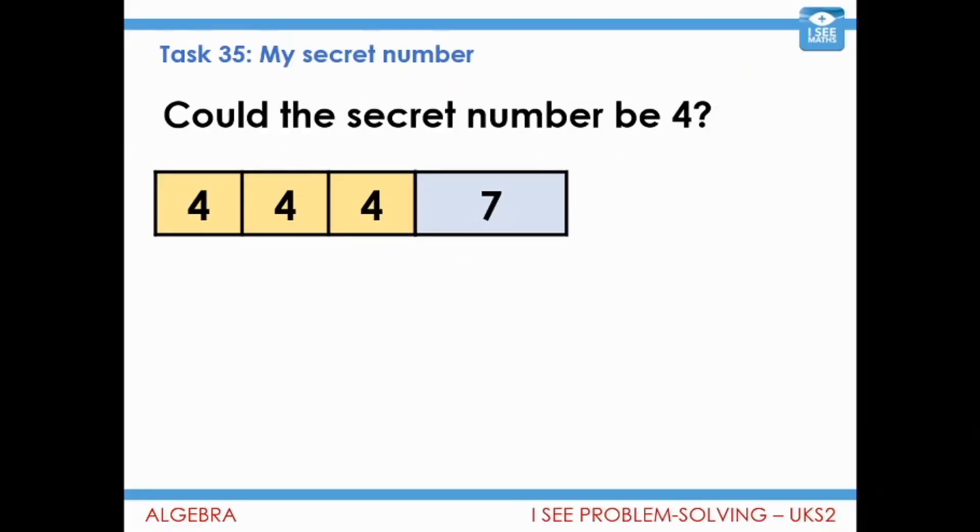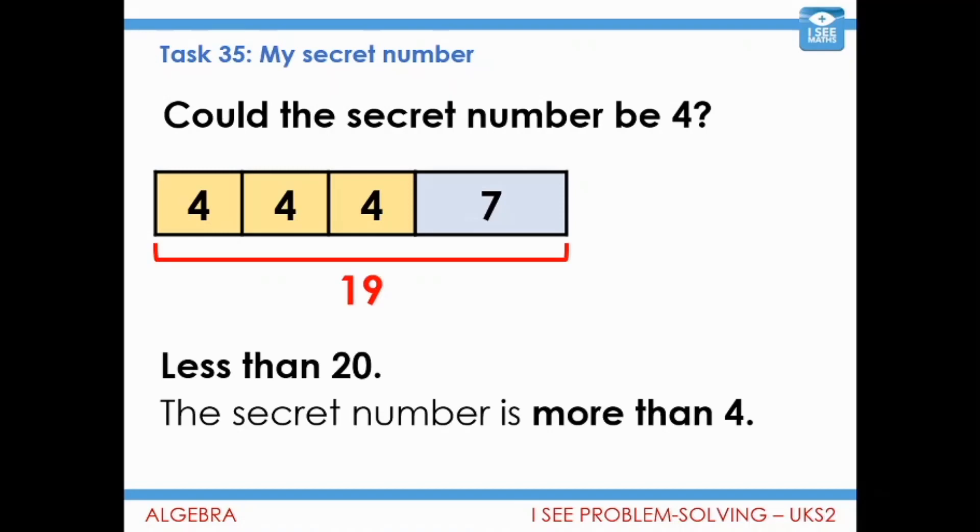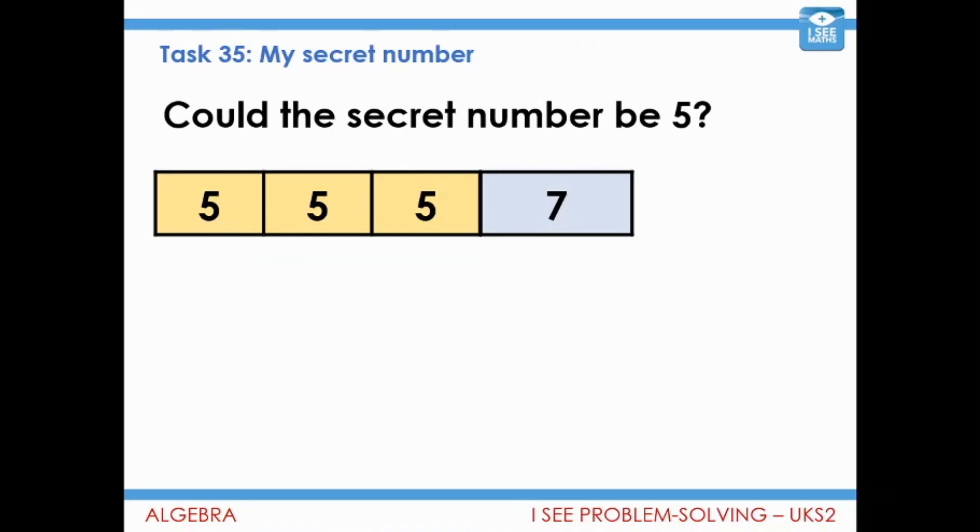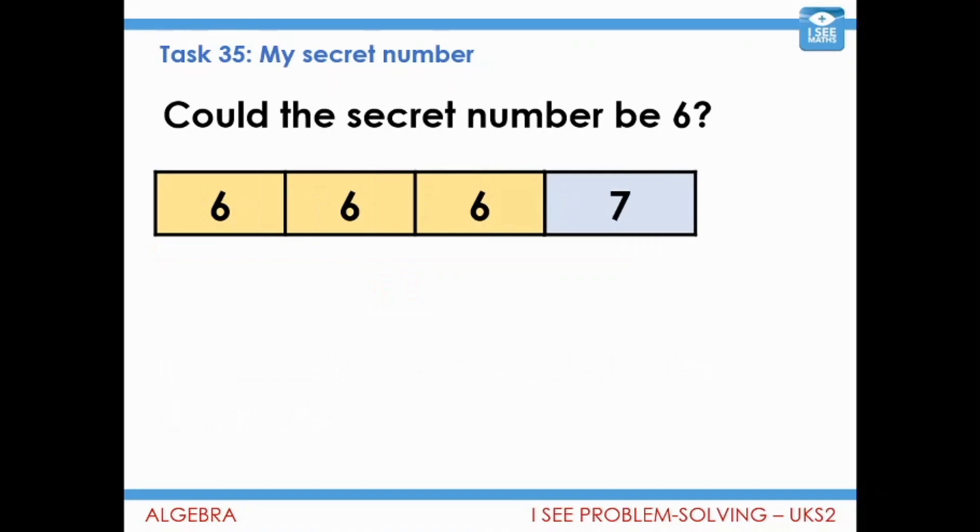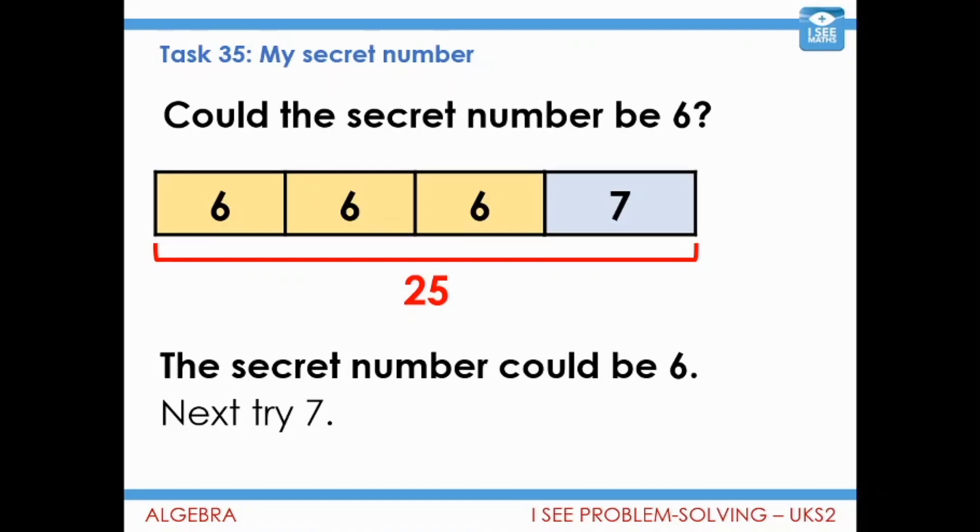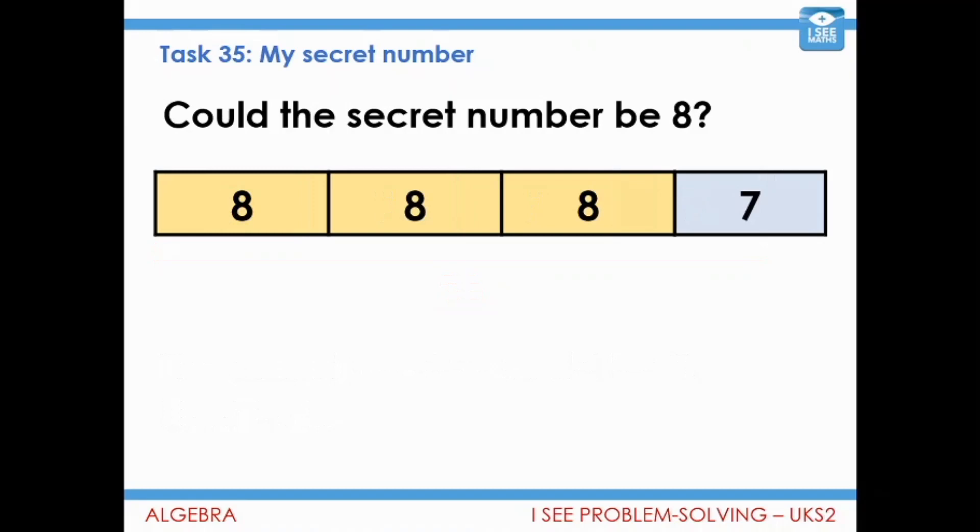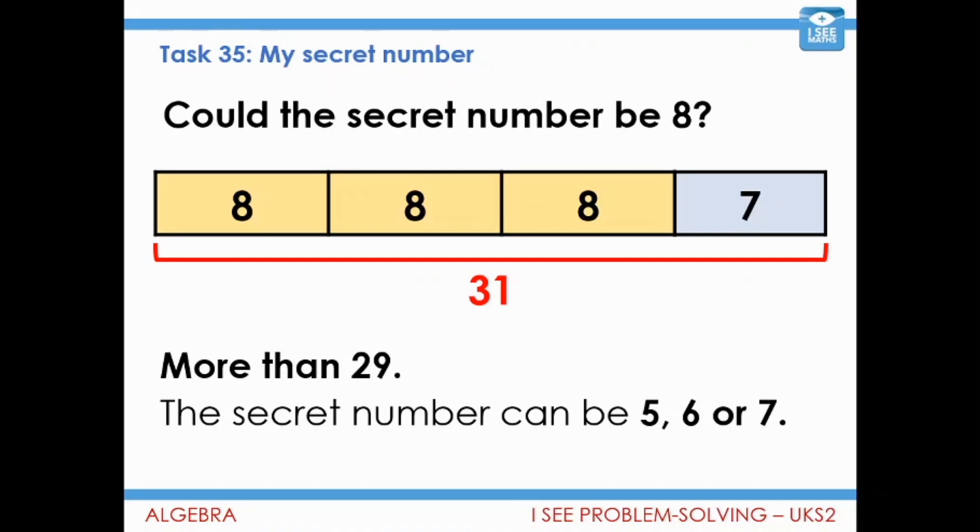Let's see if we can work through to find all the possible secret numbers. So, could the secret number be 4? 3 lots of 4 plus 7? Now, that's 19. That's less than 20. So, the secret number we know from that, it's got to be more than 4. So, could it be 5? 3 fives, add the 7. 22. There we go. It's in the right range. The secret number could be 5. So, next, it makes sense to try 6 if I'm going to find all the possibilities. 3 lots of 6, add that 7. Could that be right? 25. Next one I'm going to try is 7. 3 sevens and then add another 7. So, secret number, yeah, it could be 7. What about 8? Could the secret number be 8? Now, if I go 3 eights to 24, add that 7. 31. So, that is more than the range that we're working in. So, the secret number, well, it could be 5 or 6 or 7. That's all the possibilities.